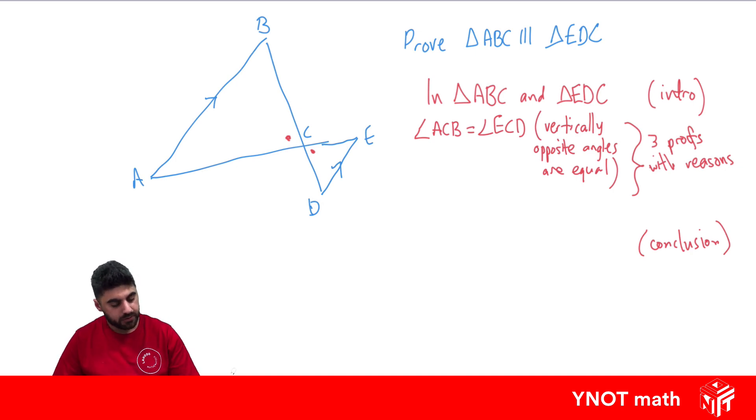What else can we say? We have two parallel lines. Whenever we have parallel lines and transversals, we can use our alternate angles or corresponding angles or co-interior angles. This time we're going to be using some alternate angles. With this parallel line and this parallel line, we have a transversal, and this angle is going to equal this angle.